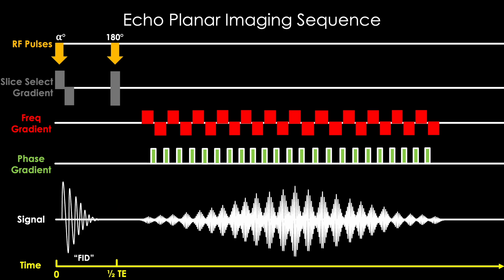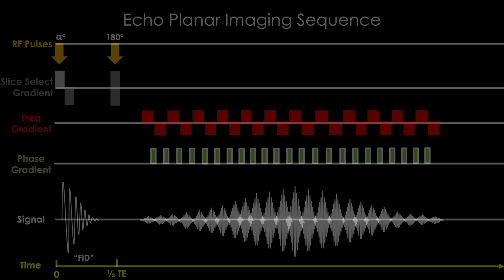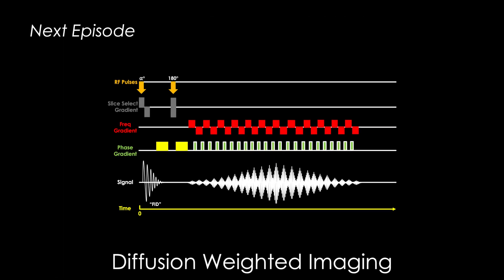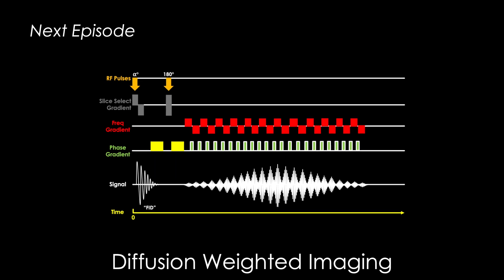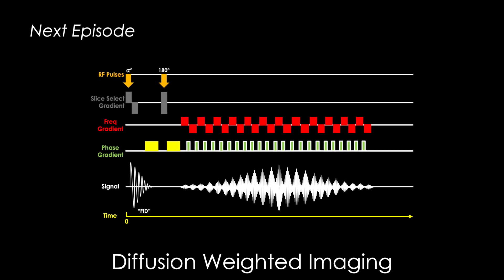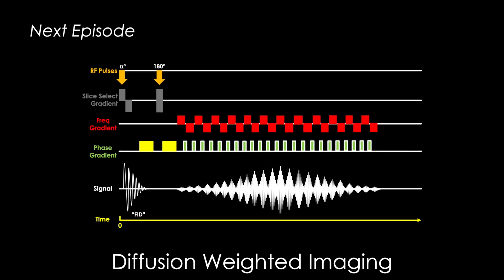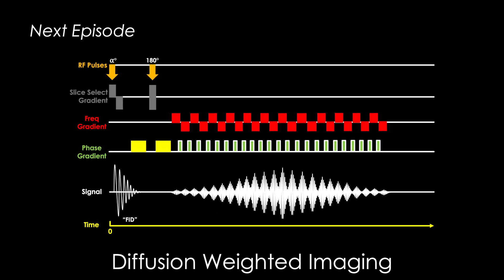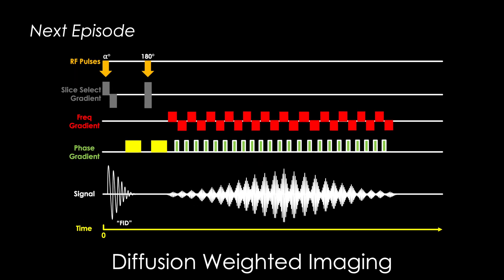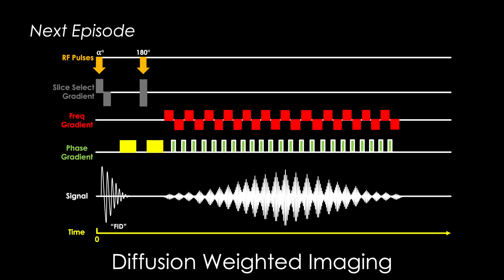But there's a slight problem, particularly when it comes to the second example. In this current form, we can't actually detect water movement, at least not on the level we need in order to detect things such as strokes. Is there a way we can modify this sequence to improve our sensitivity? On the next episode of MRI Physics Explained, we build off the lessons we developed in this lecture and take a deep dive into diffusion-weighted imaging. A very cool imaging technique that I guarantee has impacted the life of you or a loved one at some point.